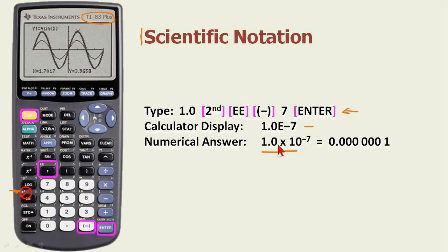1.0 times 10 to the minus 7 just means we've taken this decimal point and moved it over 1, 2, 3, 4, 5, 6, 7 places. So this is not a negative number in the true sense; it's really just a way to move the decimal to the right or to the left.